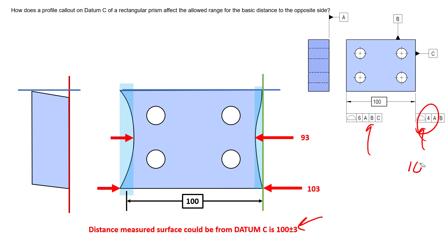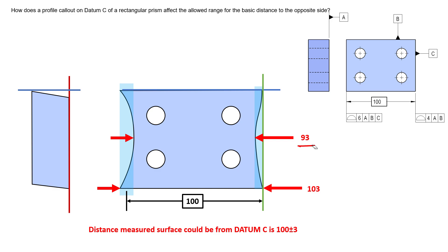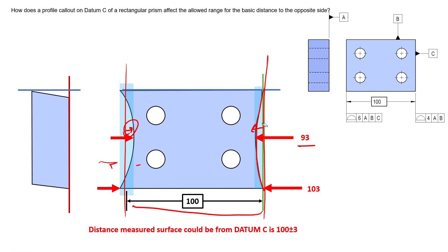For example, if you allowed ten millimeters of tolerance on the right surface, the datum is still established from the high points, and the location of the left surface relative to datum C doesn't change. But allowing more form error means you could allow the part to get very thin. If you don't want loose form here, keep the four millimeter tolerance. The worst case measurement then becomes 93 millimeters: datum C is established from the high point of datum feature C, we go four millimeters in, then 100 millimeters over, then three millimeters in — totaling seven millimeters from the nominal.